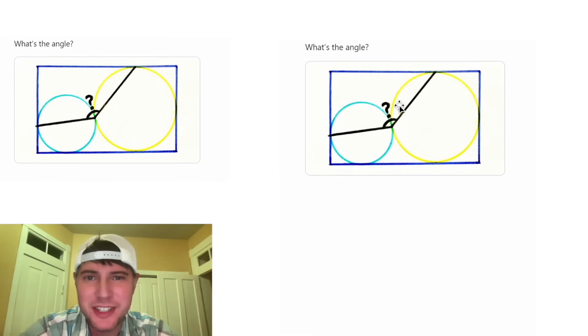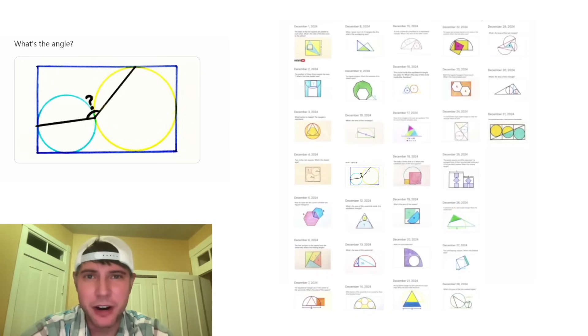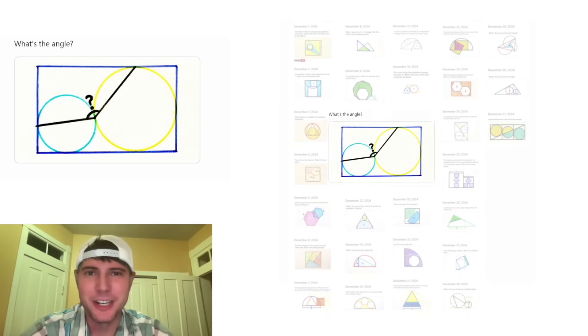Hey guys, this looks like a fun one. It says, what's the angle? We want to know this angle right here. This is day 11 of our Advent calendar. For the month of December, we're gonna solve 31 Catriona AgPuzzles in 31 days.